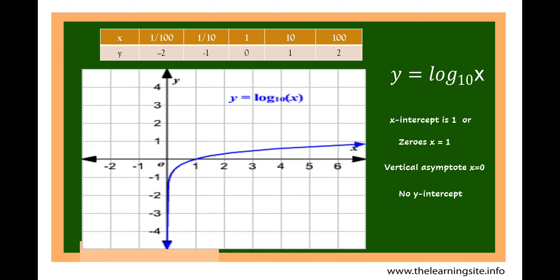Let's try to graph y is equal to log of x to the base of 10. We have here the table of values. If y is negative 2, x is 1 over 100. If y is negative 1, x is 1 over 10. If y is equal to 0, x is equal to 1. If y is 1, x is 10. And if y is 2, x is 100. We have here the graph of y is equal to log of x to the base of 10.